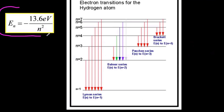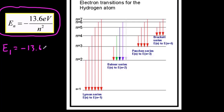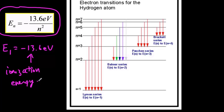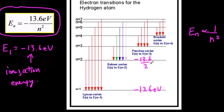The energy levels in hydrogen follow this formula. There's a negative sign because the electrons are trapped by the proton, meaning they have negative energy — it would take work to separate the electron and proton. The ground state E1 is negative 13.6 electron volts, which is also the ionization energy — it would take 13.6 eV of energy to knock a ground state electron out of the atom. The subsequent energy levels vary as one over n squared.